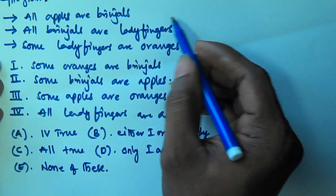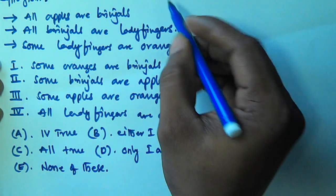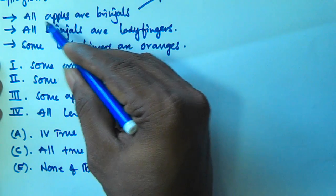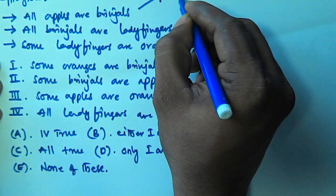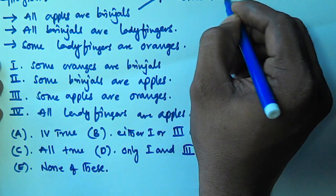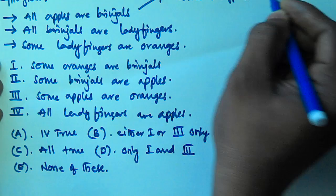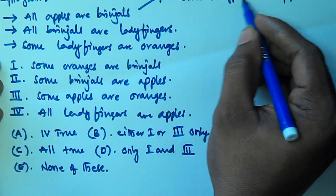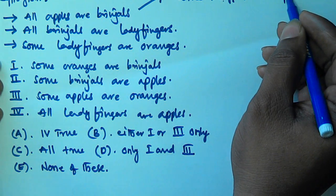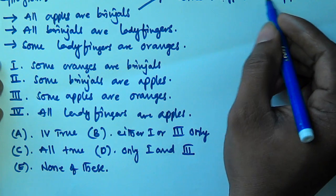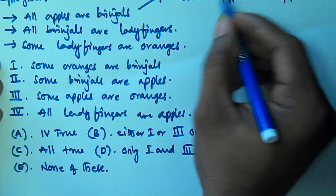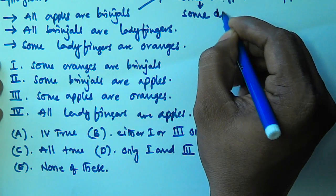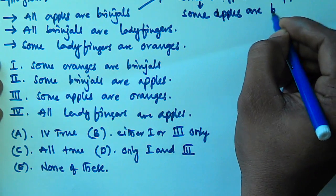From Statement 1 — All apples are brinjals — when we interchange brinjals and apples, all becomes some. So we get Some brinjals are apples. And since some is there, we can interchange the subject and predicate, so we also derive Some apples are brinjals.